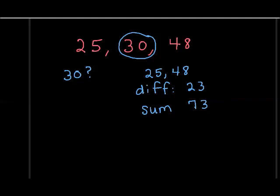Well, 30 needs to be, or the third side must be between 23 and 73. And the 30 is. So, this would, yes, it makes a triangle. Or it can make a triangle.